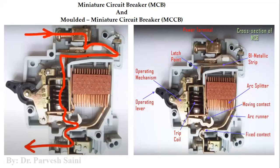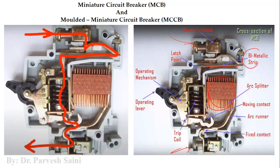MCBs are installed at home at the distribution point. Inside an MCB we have power terminals where the main supply is connected, terminals where the load is connected, a bimetallic strip, a coil which when energized breaks the circuit, a moving contact, and an operating lever used to disconnect the circuit manually if needed.